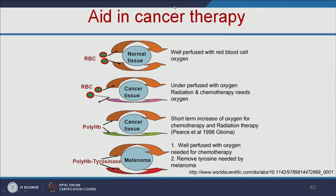Artificial RBCs can also be used for cancer therapy. Normal tissue is well perfused with RBCs and oxygen, but cancer tissue is under-perfused with oxygen. For successful radiation and chemotherapy, you need oxygen, but normal RBCs cannot enter cancerous tissue. Polyhemoglobin, due to its small size, can easily enter cancerous tissue and increase oxygen supply, which is useful for successful chemotherapy and radiation therapy. Additionally, along with polyhemoglobin, we can add the enzyme tyrosinase, which removes tyrosine needed for melanoma growth. So it provides oxygen for therapy and also removes tyrosine needed for melanoma growth — suppressing cancer growth.